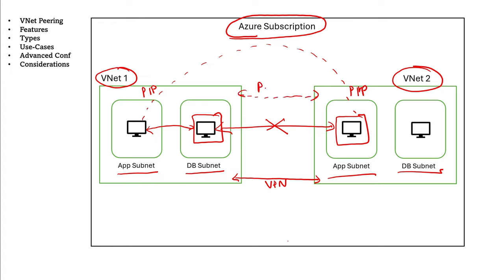You need to create a peering connection between two different virtual networks. Once the peering connection is created, the virtual machines in one virtual network can communicate to virtual machines in another virtual network. The same way you manage and filter traffic within a virtual network — using route tables and network security groups — you can do the same across peered virtual networks. Basically, virtual network peering enables a connection between two different virtual networks so they can communicate with each other.